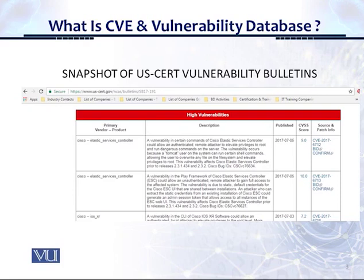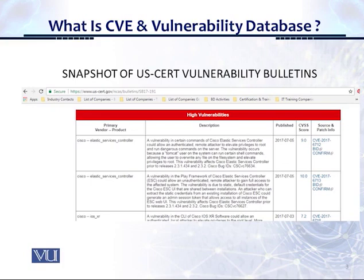If you go here and look at the vulnerability database or the bulletin that is shared here, it is shared by the month or the year. You can click on, let's say, July 2017, and it will give you all the vulnerabilities issued during that time. You can see on the screen that on the top, we have some Cisco vulnerabilities of a high category. It gives the description of the vulnerability, the publish date, the CVSS score — which on the top is 9 for the top vulnerability — and then the source and patch information as well.